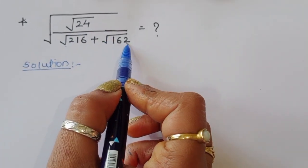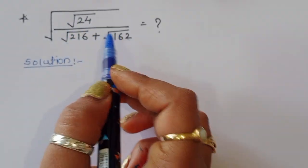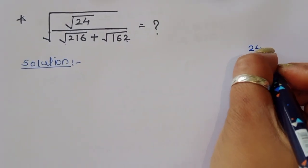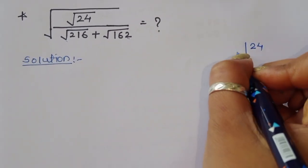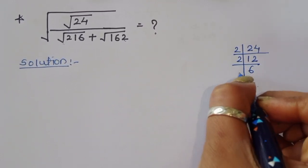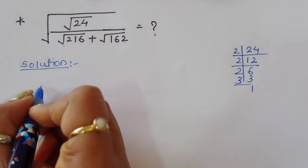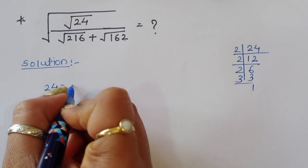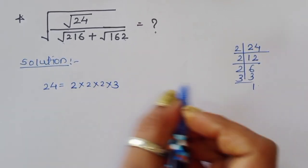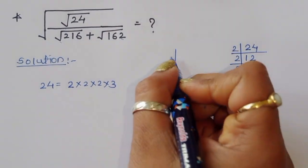For square root of 24, we take the prime factors of 24. So 24 equals 2 times 2 times 2 times 3. This is the factor of 24. Now we move to the second term, 216.